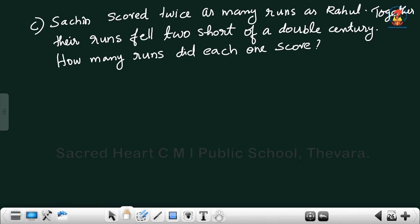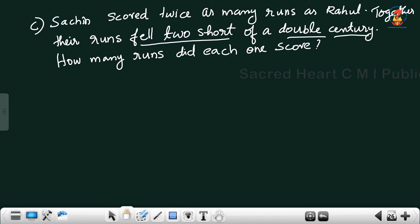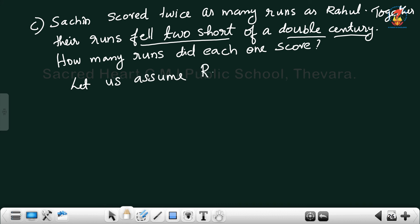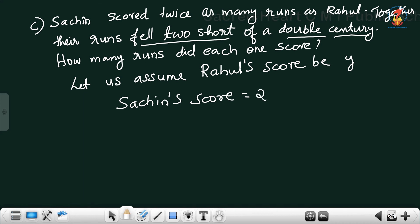Next problem: Sachin scored twice as many runs as Rahul. Together the runs fell too short of a double century. Double century means 200. Fell too short means subtract 2 from double century. Sachin scored twice as many runs as Rahul means Rahul's score is y — let us assume Rahul scored y.